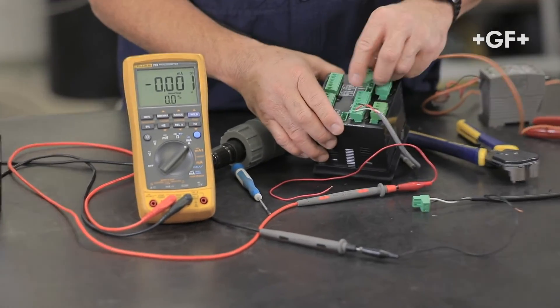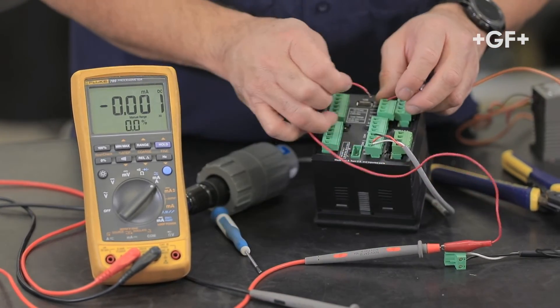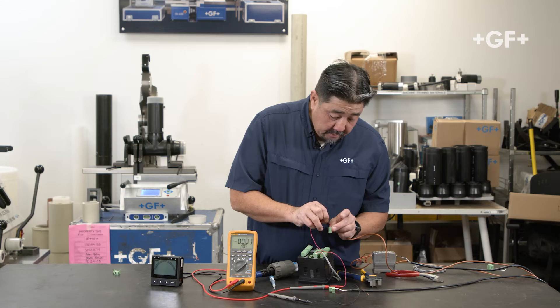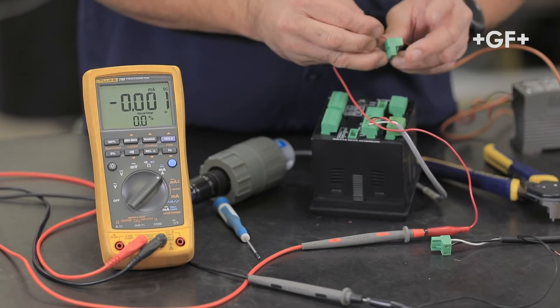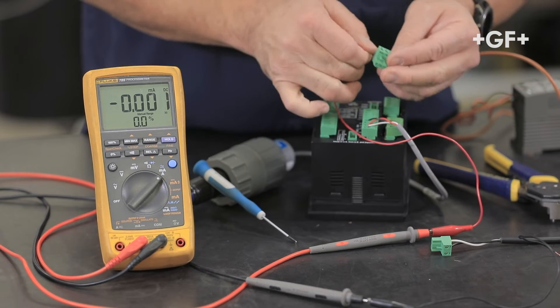Okay, loop one minus is going to be my signal wire going to my multimeter or HMI or PLC. So let me bring that in to loop one minus. Let me tighten that down. Okay, got it.